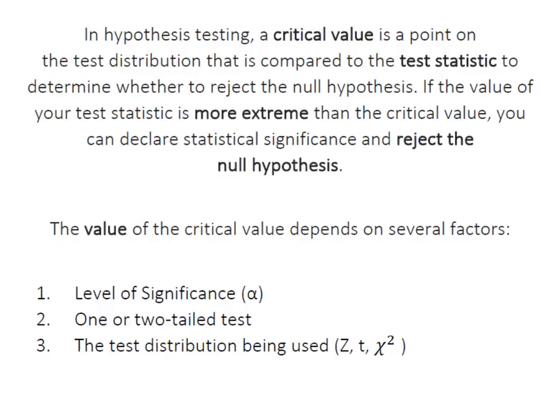In hypothesis testing, a critical value is simply a point on the test distribution that we compare to the test statistic to determine whether to reject the null hypothesis.